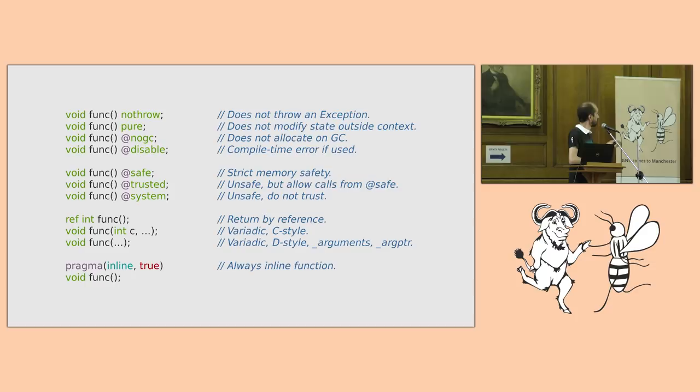You also have variadics. So D style variadic. How that works is that at the call site, the first named parameter is actually a dynamic array of type information objects that describe the variadic parameters that follow. Then inside the function, we then create the va_list from that. And with try finally constructs.